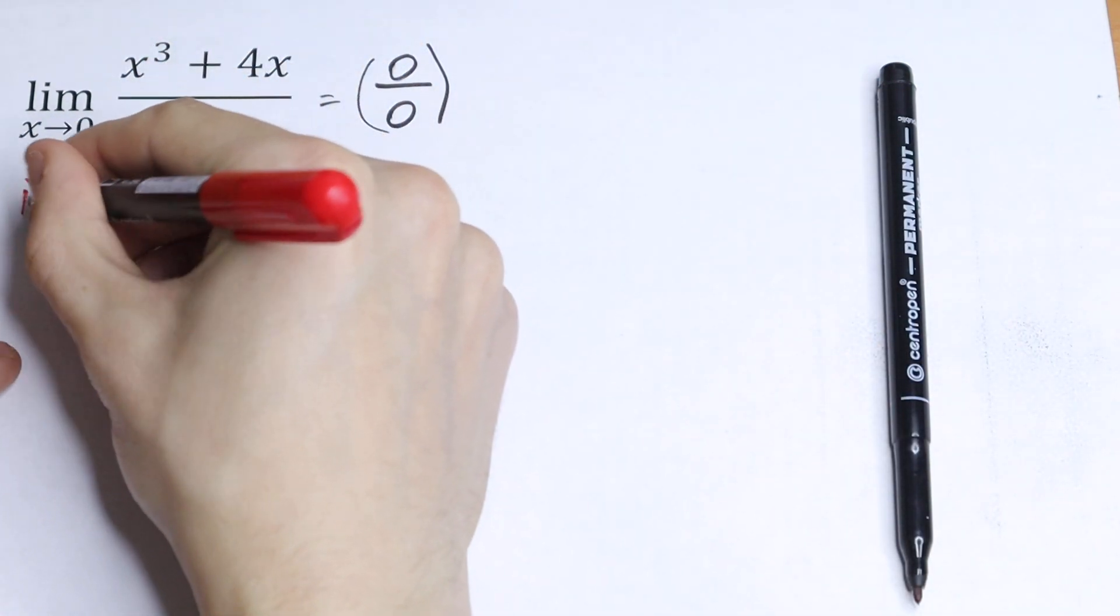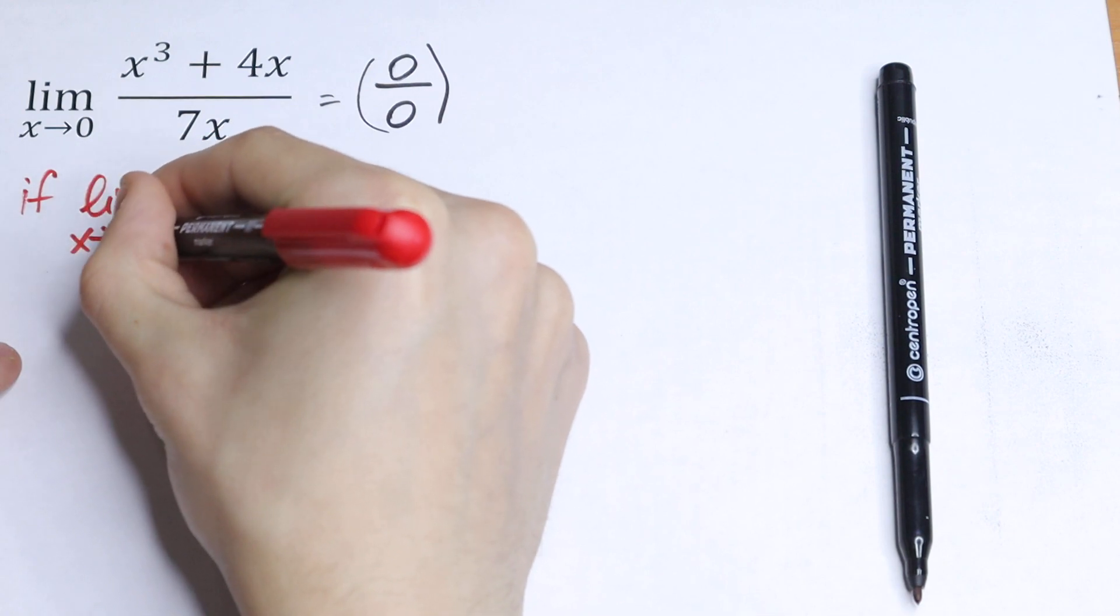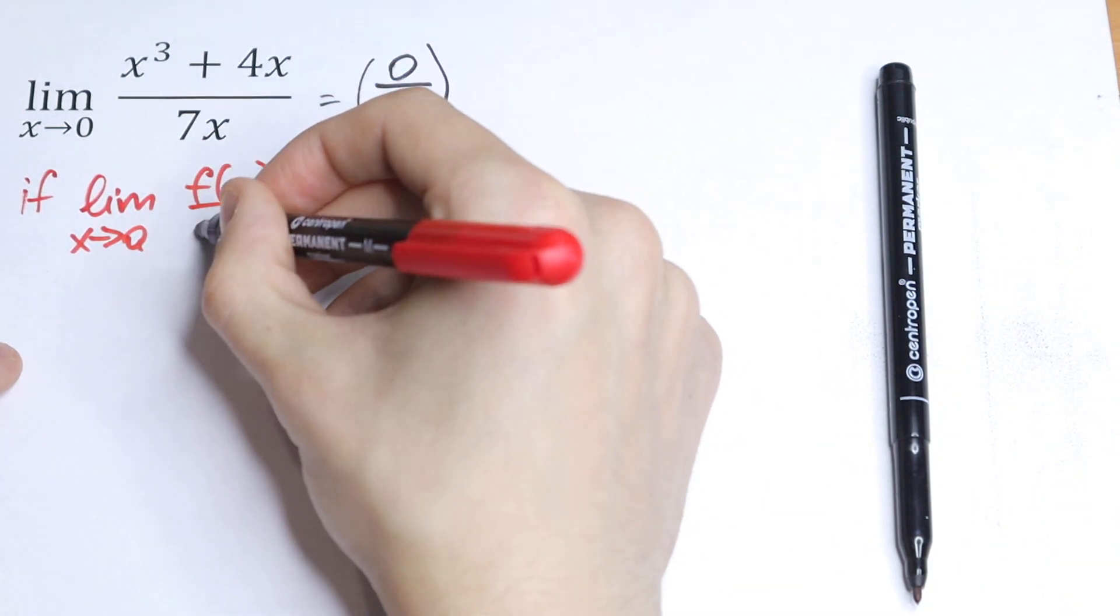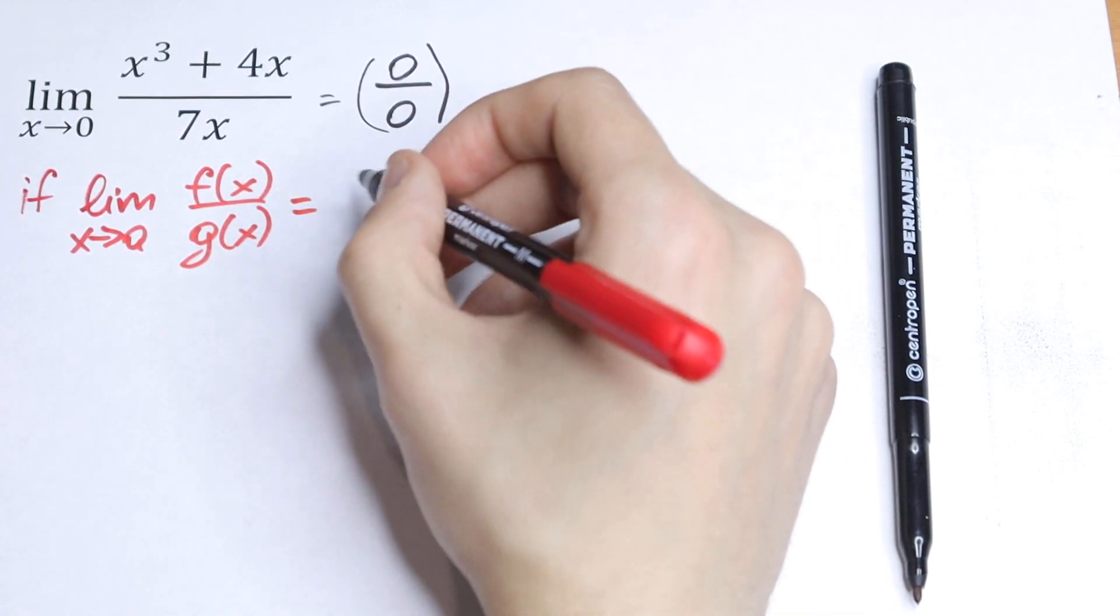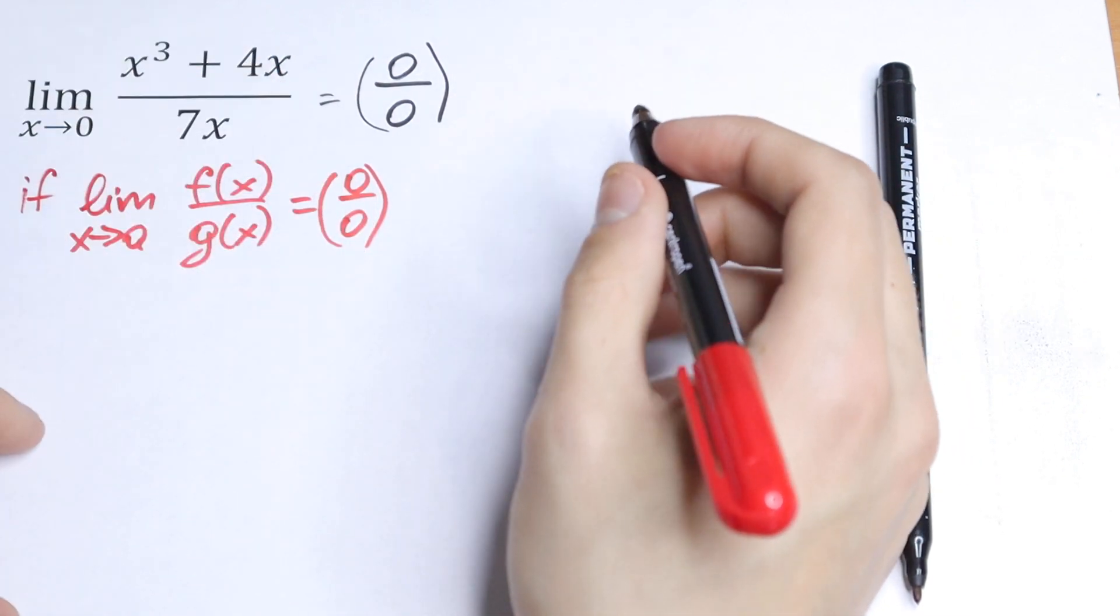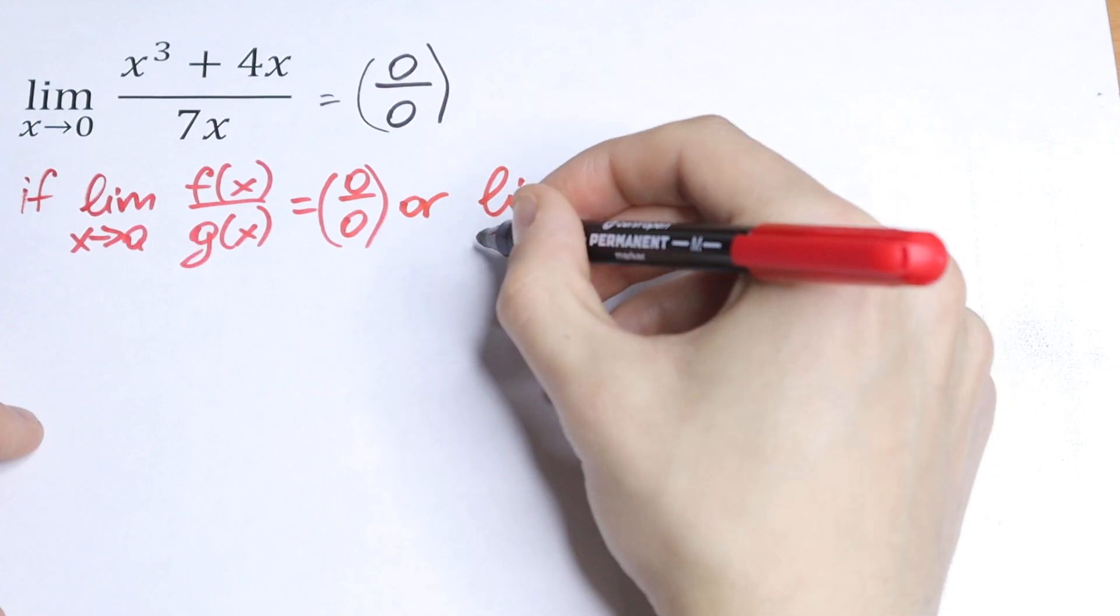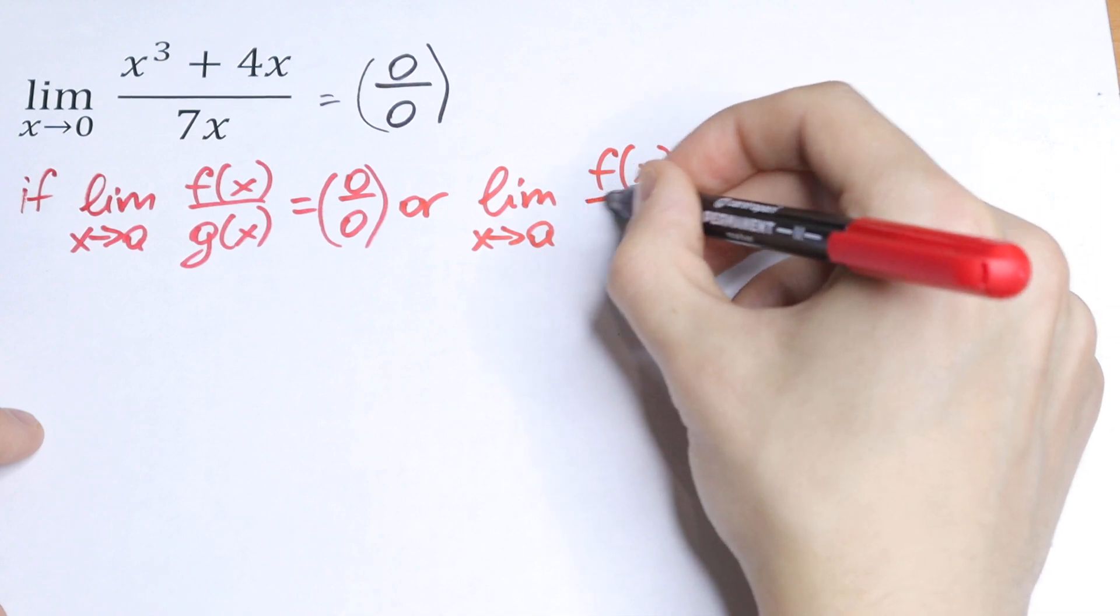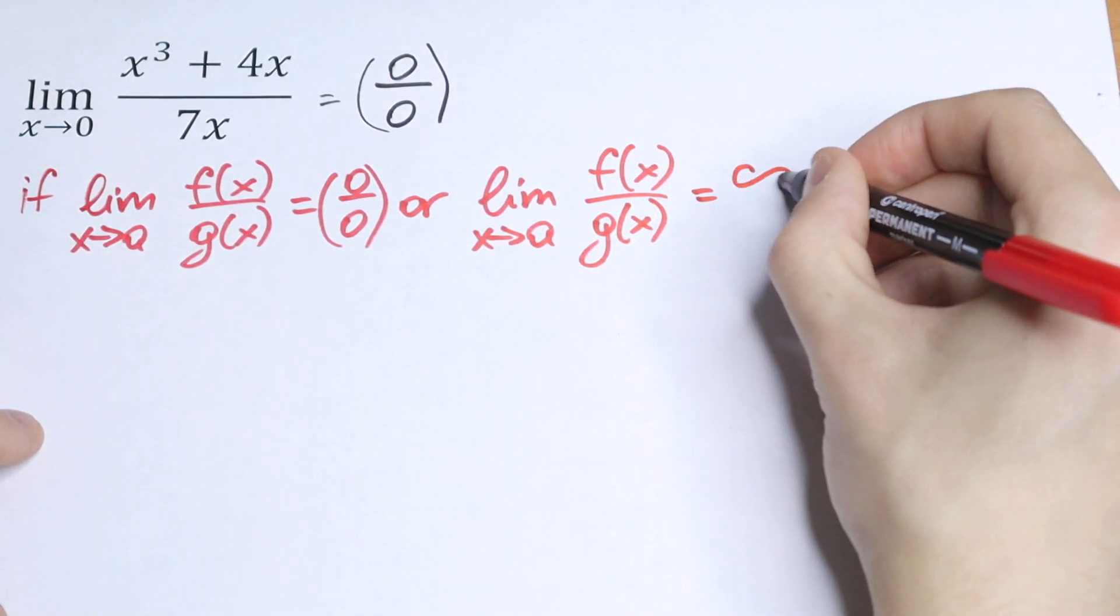What is this rule about? If you have a limit as x approaches to a, for example, of f of x over g of x, and this limit, if we use direct substitution, will be equal to 0 over 0, so it will give us an undefined answer.